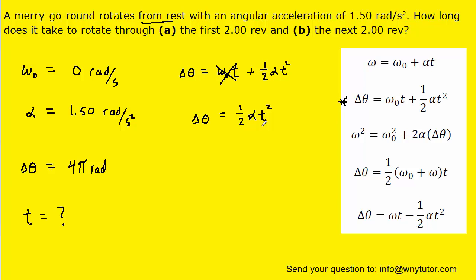So, now we can solve for the time t by multiplying both sides by two, dividing by alpha, and taking the square root.